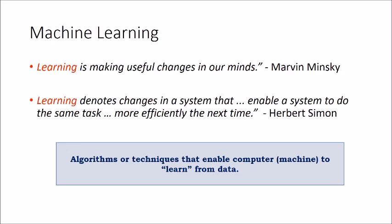First of all, what is machine learning? Before understanding the concept of machine learning, let me ask you: what is human learning? Learning is making successful changes in our minds. Whatever we learn should be observed through our mind so that we can take decisions. Learning denotes changes in a system that enable a system to do the same task more efficiently the next time.